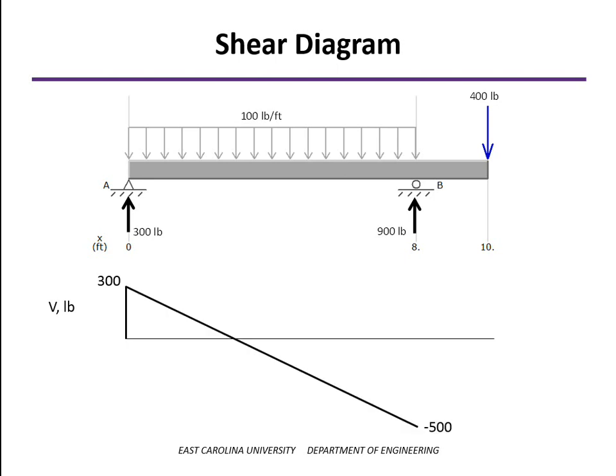Starting at 300 and subtracting 800, we end up at minus 500 pounds at B. Where the shear crosses the axis — starting at 300 going down at a slope of minus 100 — 300 divided by 100 gives us 3 feet from A to where the shear becomes zero. The remaining 5 feet takes us out to B. At B, we have the 900-pound concentrated force upward, so starting at minus 500 we go up 900 to 400. There's no distributed load from B to the end, so that's a flat part of the shear diagram, and finally 400 pounds down brings us back to zero.